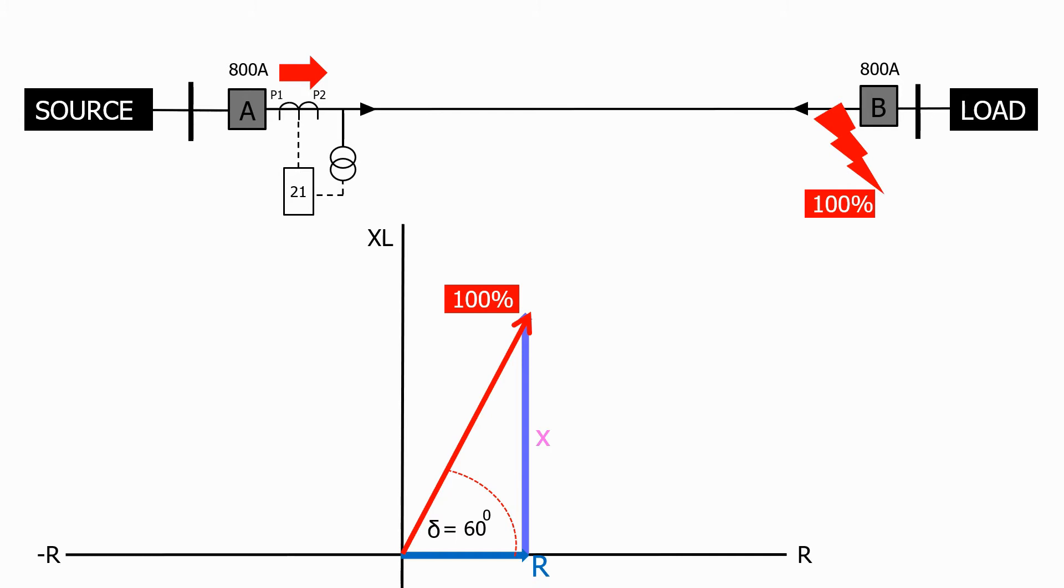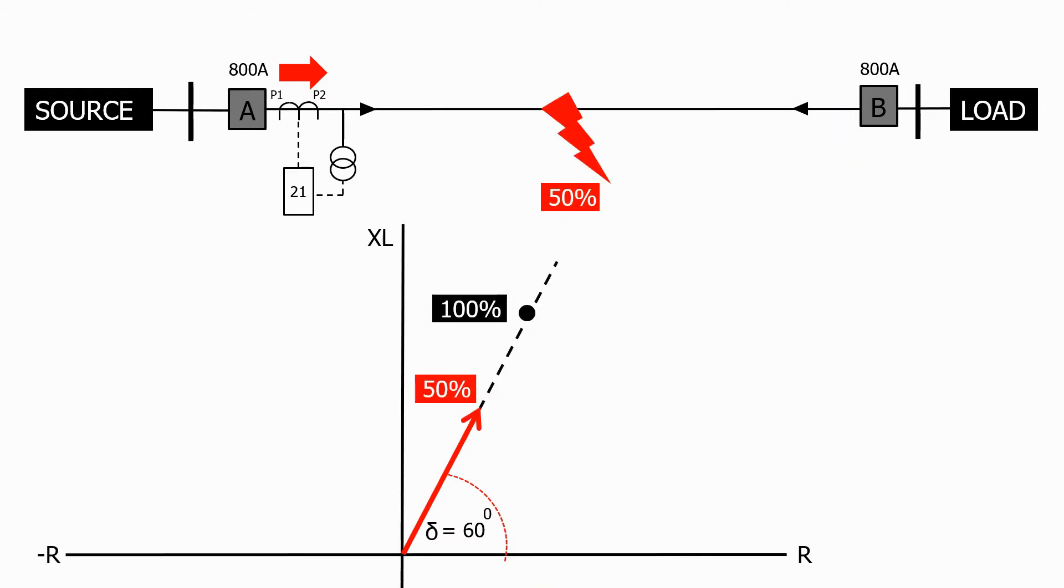Let's now apply a fault at 50% of the total line length. As we're halfway down the line, the resistance and reactance values will be about half of the full line impedance, but the characteristic angle will remain at 60 degrees.